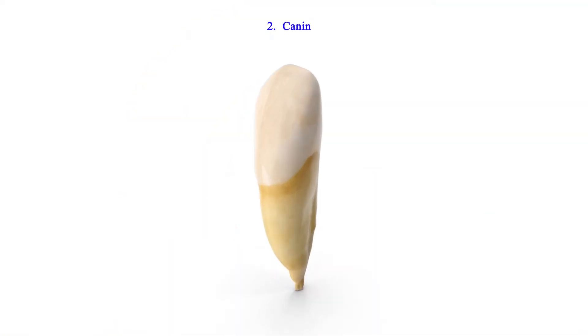Canines. They are blunt especially in man and sharp. The canines are used to tear food.